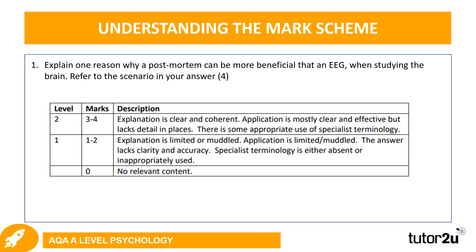The question was: explain one reason why a post-mortem can be more beneficial than an EEG when studying the brain — refer to the scenario in your answer. To gain a level two answer and achieve three to four marks, the explanation needed to be clear and coherent, application to the scenario needed to be mostly clear and effective. If you were to achieve level one, or one to two marks, the explanation is limited or muddled and application to the scenario is also limited or muddled.